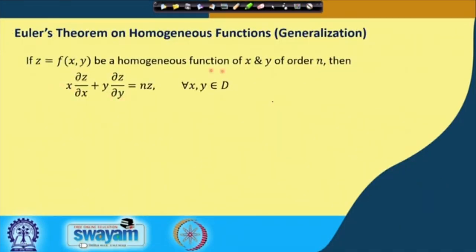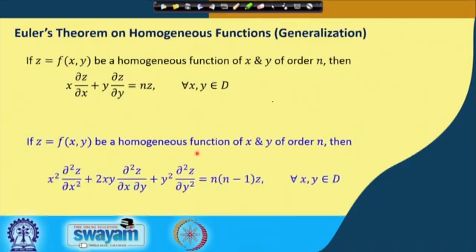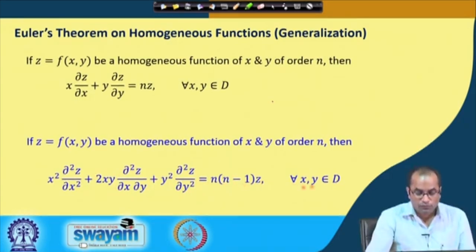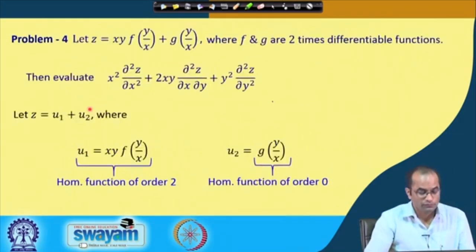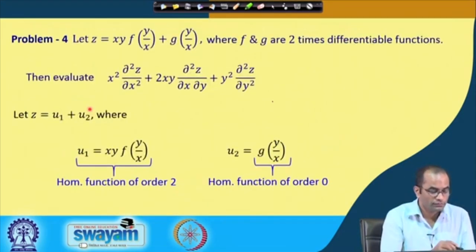A generalization of Euler's theorem applies to second-order partial derivatives: if z is a homogeneous function of order n, then x²·(∂²z/∂x²) + 2xy·(∂²z/∂x∂y) + y²·(∂²z/∂y²) = n(n−1)·z for all (x, y) in the domain.